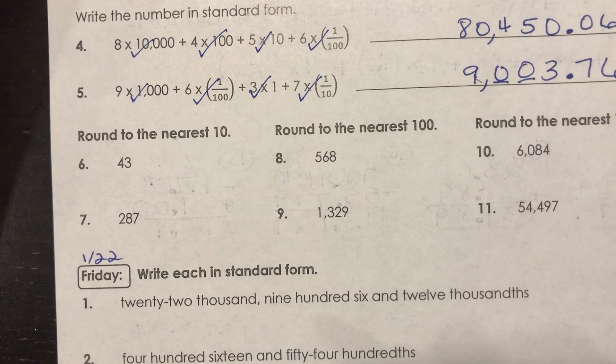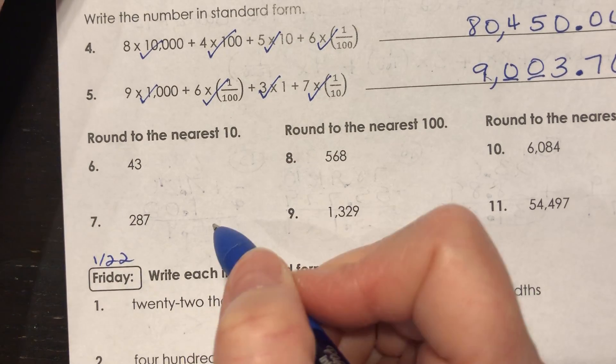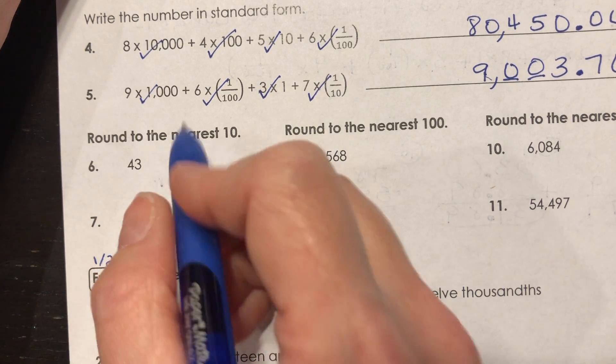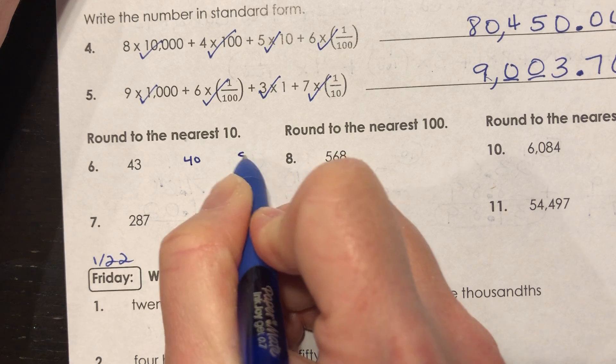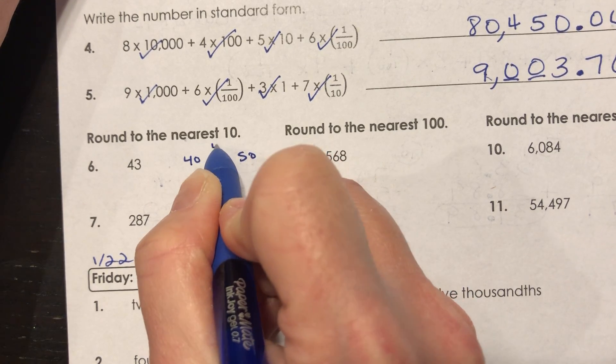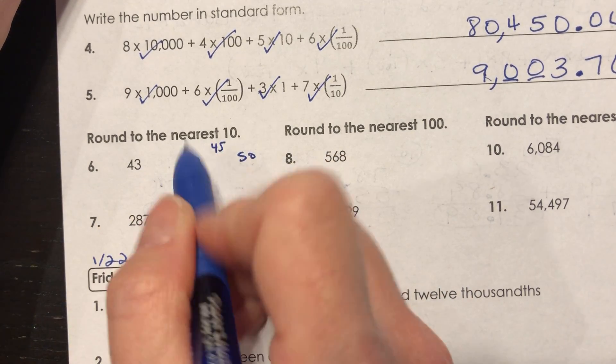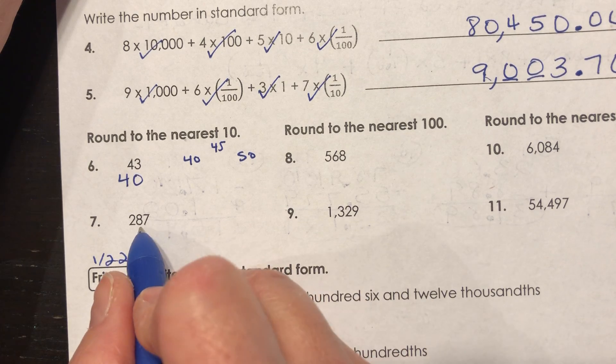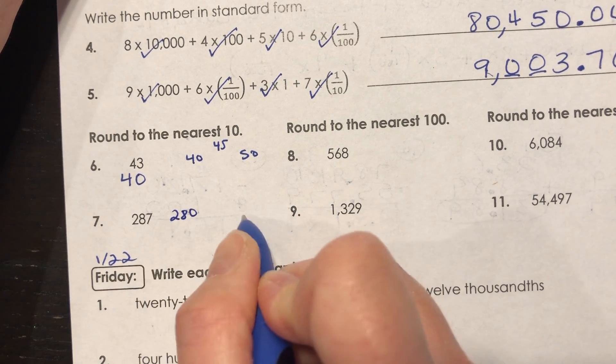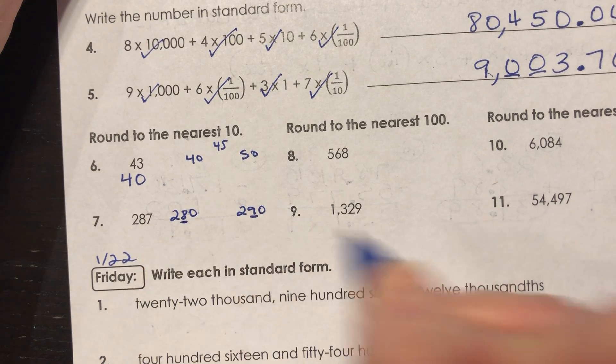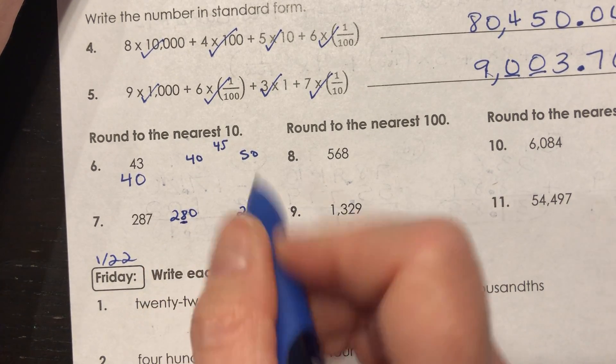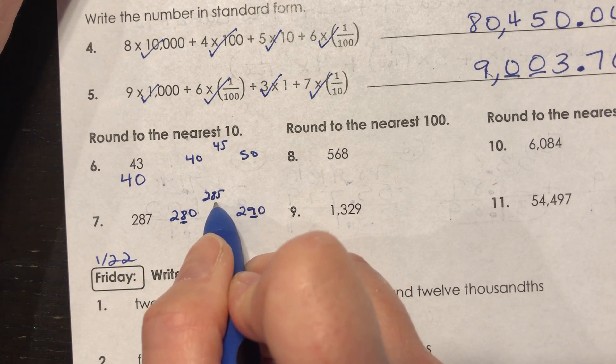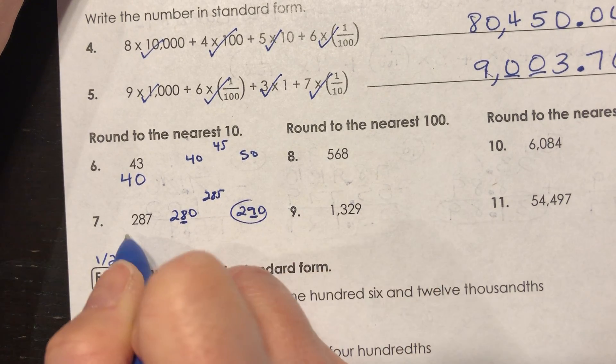Alright, a little bit of rounding here. For number six and seven, I ask you to round to the nearest 10. So the first thing we have to do is figure out, okay, which two tens is 43 between? And 43 is between 40 and 50. The halfway mark would be 45. 43 is less than halfway, so 43 would round to 40. For 287, 287 is between 280 and 290 if I'm looking at the nearest 10, right? So halfway between 280 and 290 is 285, and 287 is more than halfway, so that would round up to the 290.